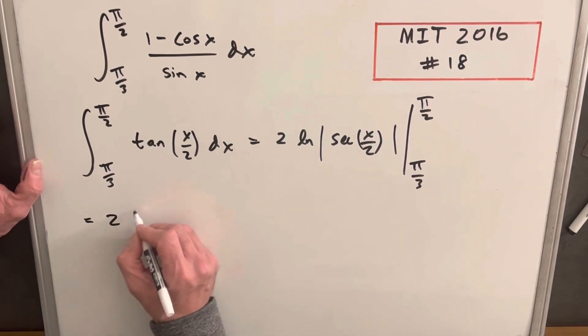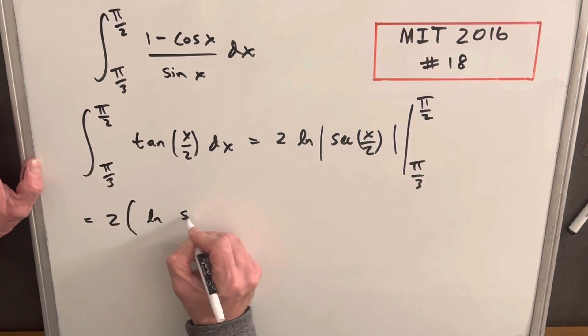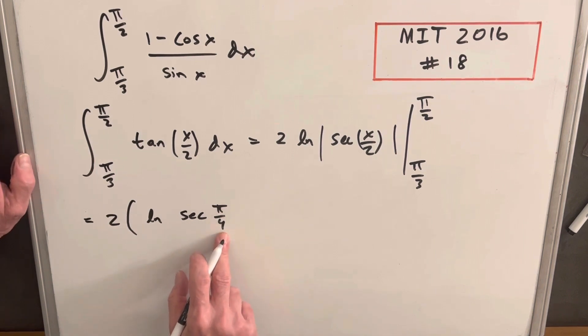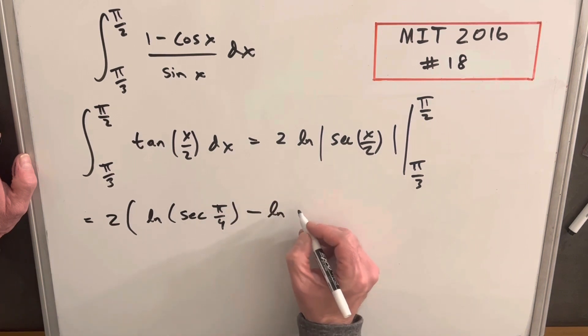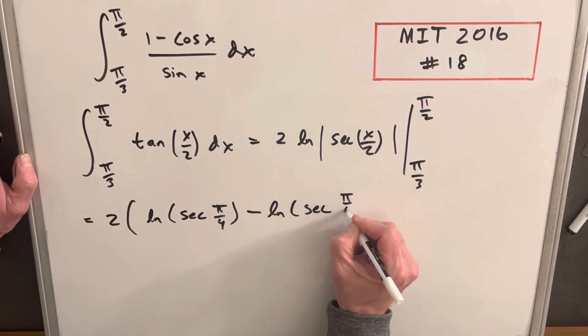Then let's evaluate this. We have to bring our 2 out front. We're going to have natural log. We put pi over 2 and divide by 2. We're going to have secant pi over 4. This is in the first quadrant, so I'm just going to drop the absolute value because we can see that that's going to be positive. And then minus natural log secant pi over 3 divided by 2 is pi over 6.